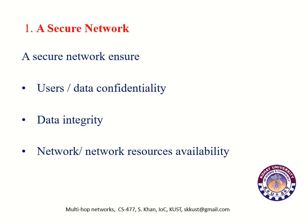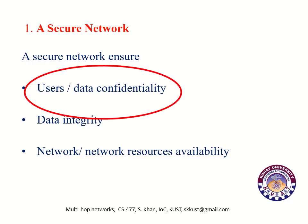A secure network ensures three important parameters. Number one, user's data confidentiality, which means that nobody is allowed to understand or read the data which is being transmitted from source to destination. Only source and destination can understand or read the data. Similarly, sender and receiver identities are kept secret by a secure network.